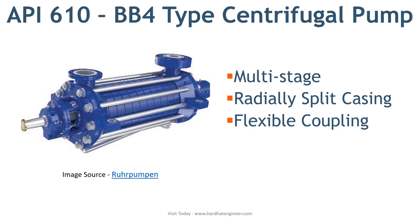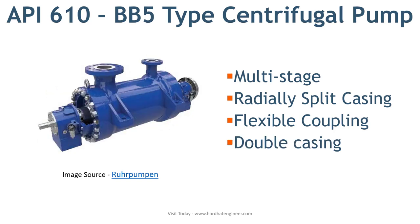Next is BB5 type pump. BB5 is known as a barrel pump due to its barrel-like design. It is used in high pressure services. It is a multi-stage, double casing, radially split design that uses flexible coupling.